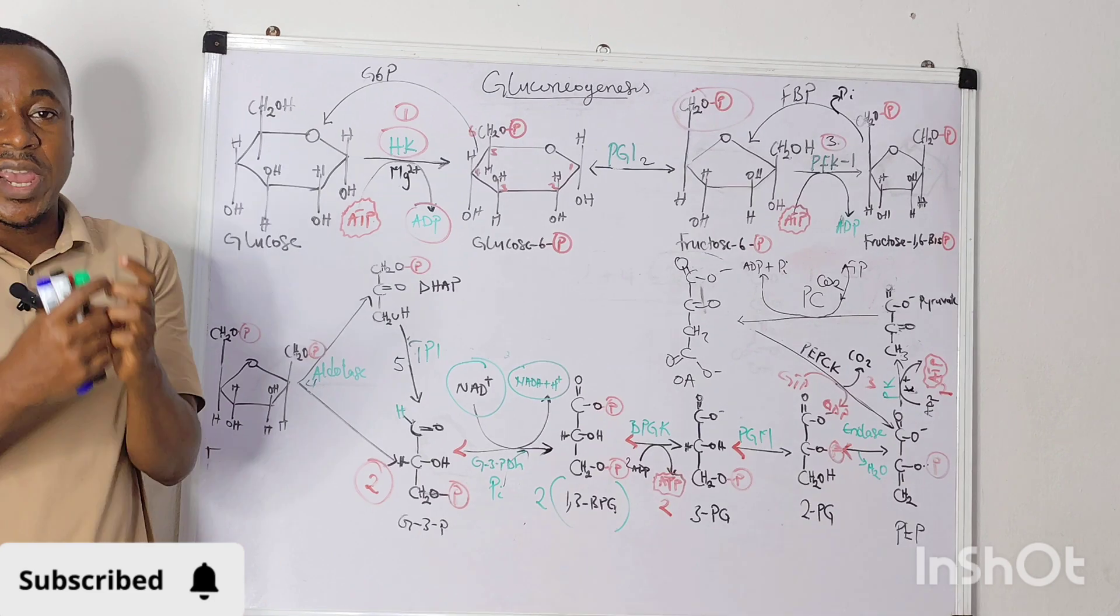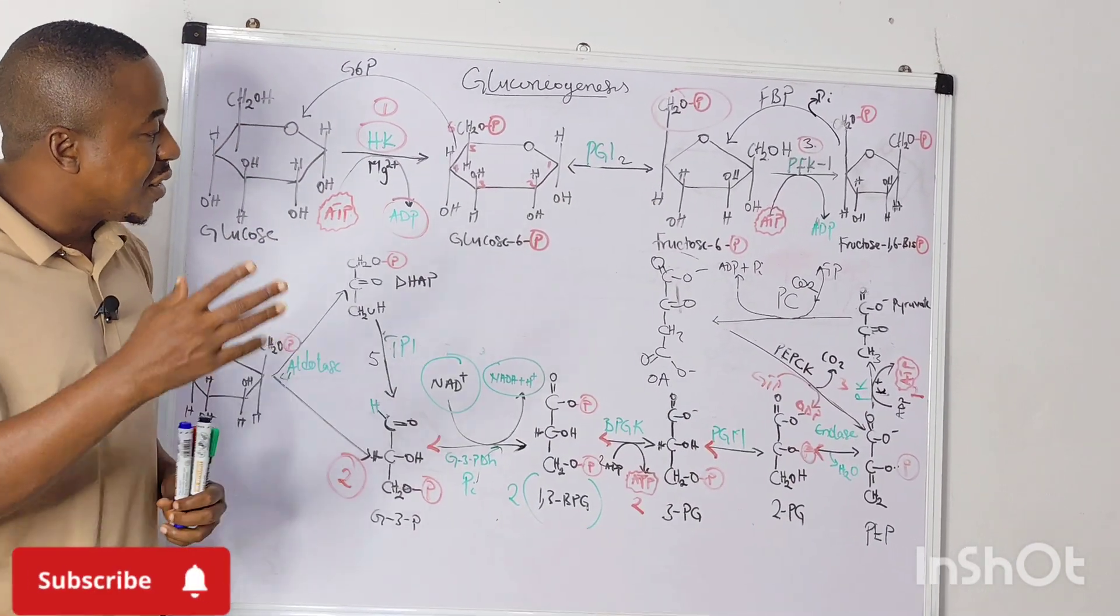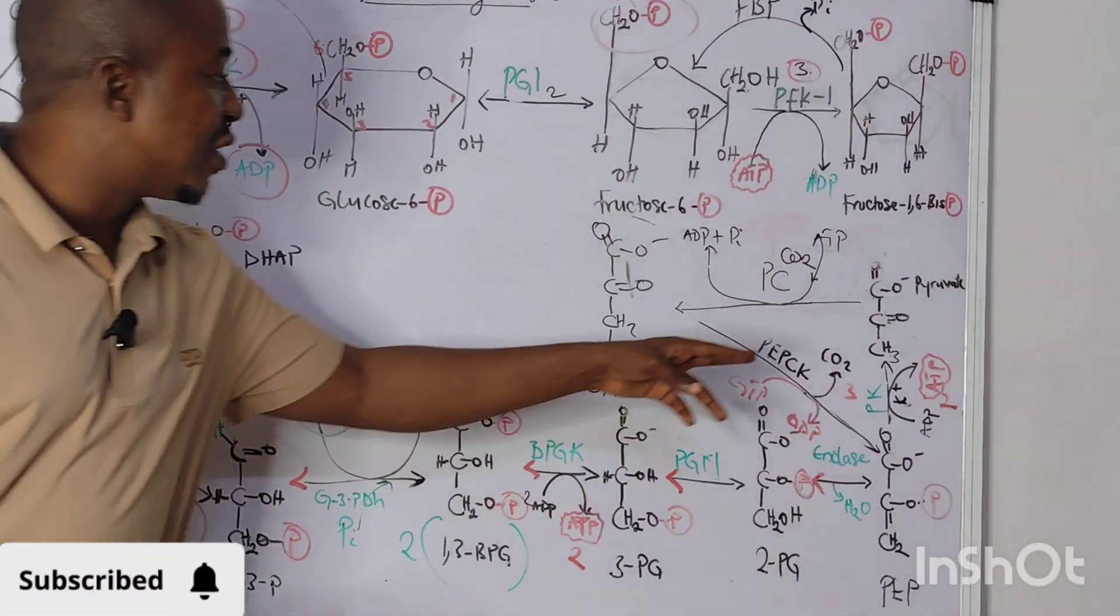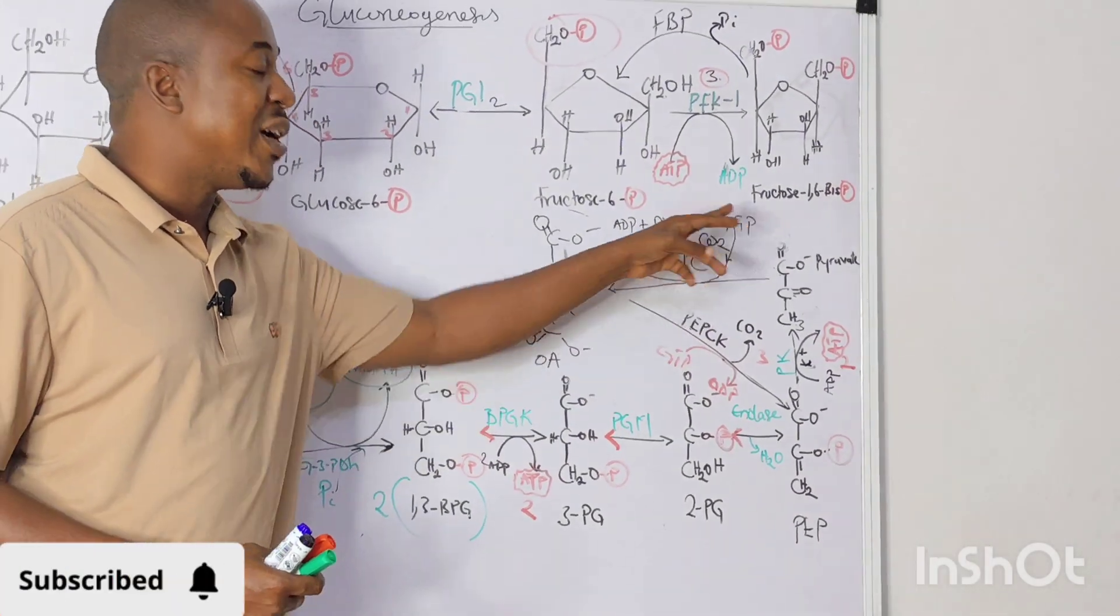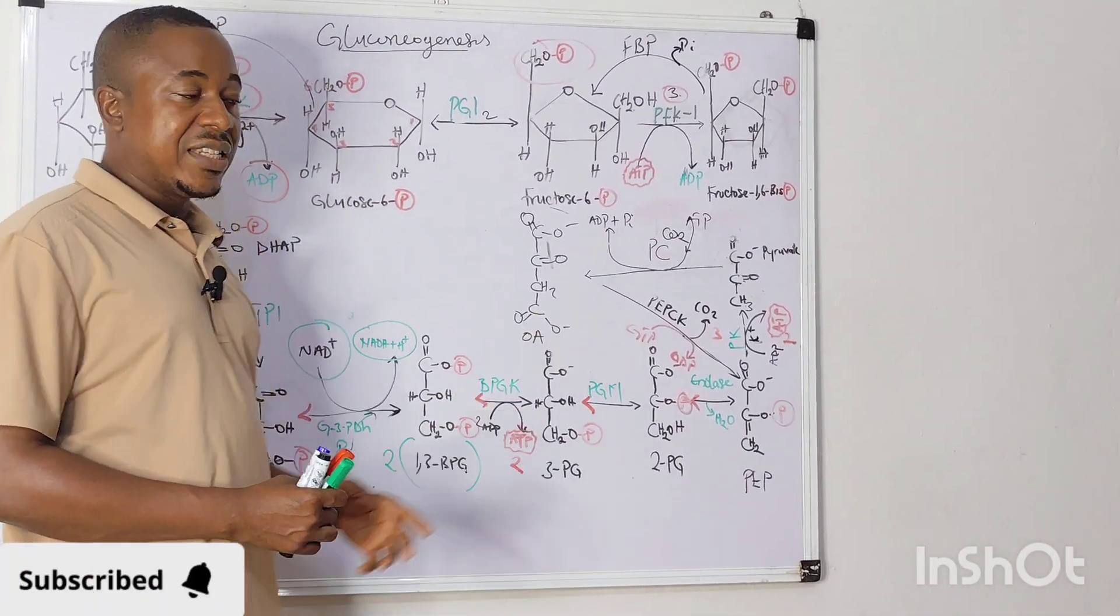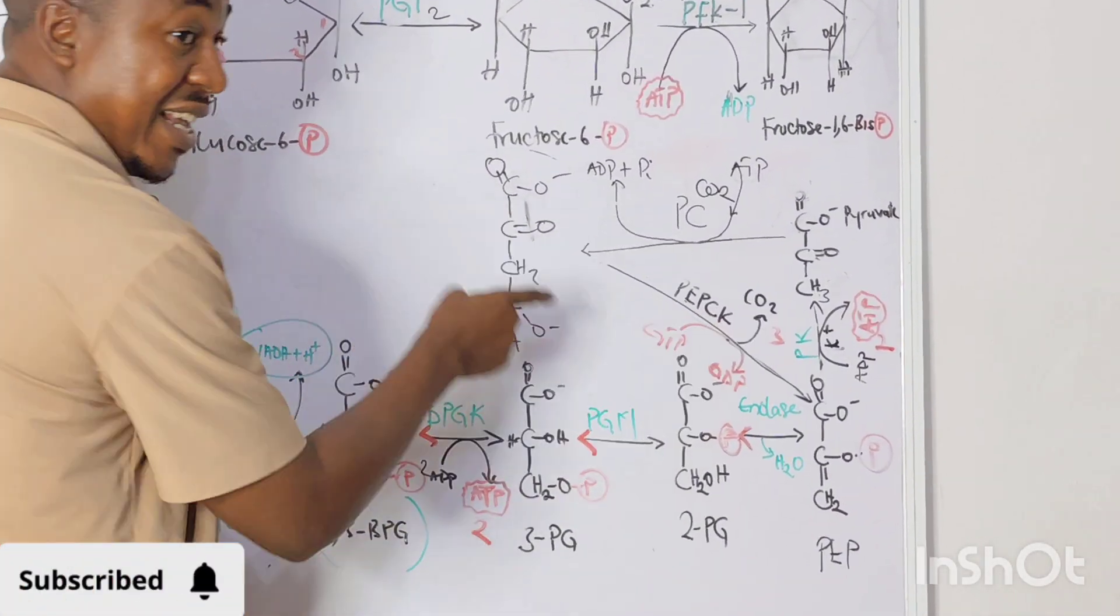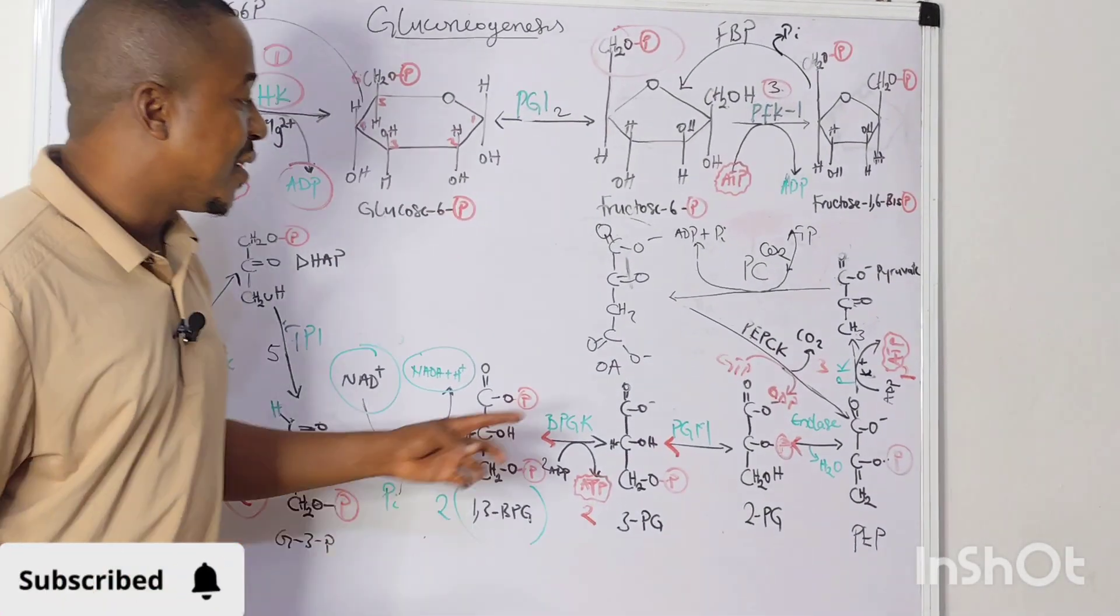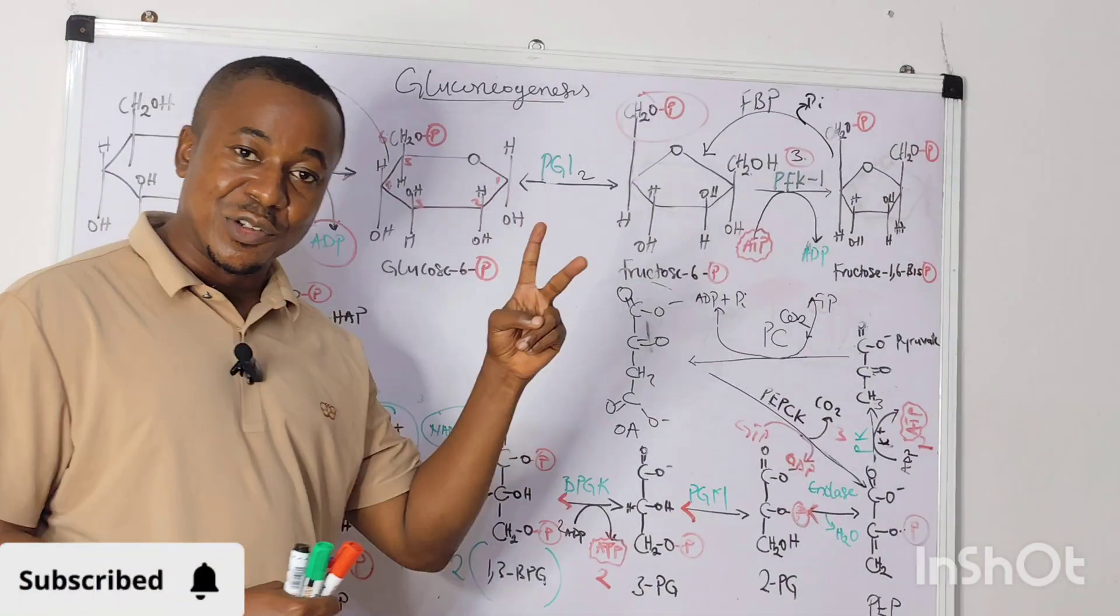So in the first case is conversion of pyruvate to oxaloacetate. Pyruvate is carboxylated using the enzyme pyruvate carboxylase. That enzyme requires the hydrolysis of ATP to form ADP plus inorganic phosphate. So that reaction will give us oxaloacetate. The oxaloacetate that is now formed will be catalyzed by PEP carboxykinase, which is phosphoenolpyruvate carboxykinase. So that means there is decarboxylation and also phosphorylation of that particular step. So the enzyme does two things together.